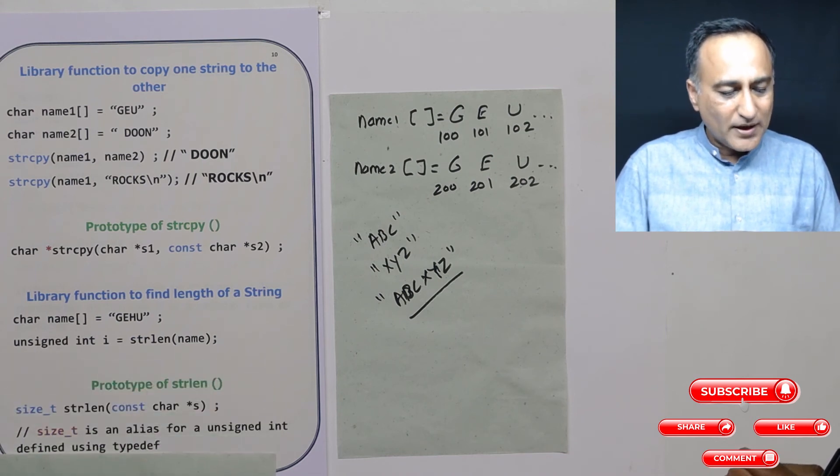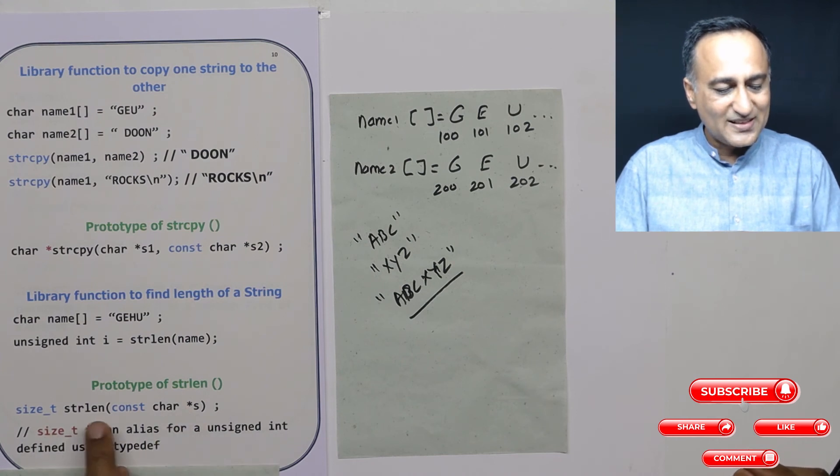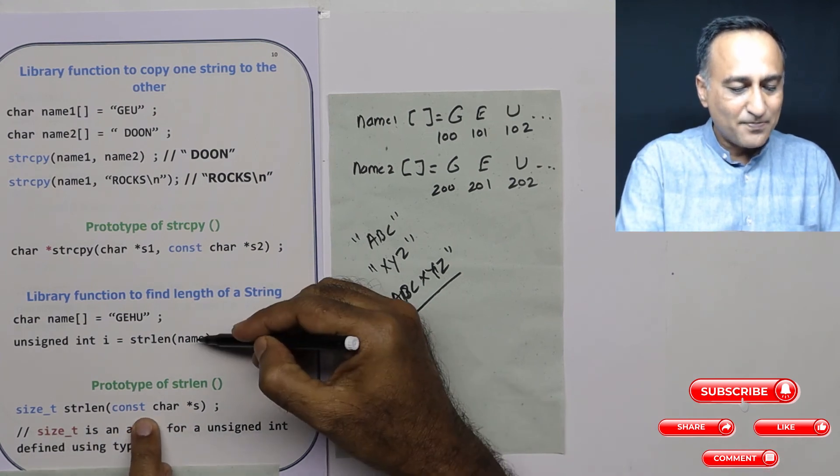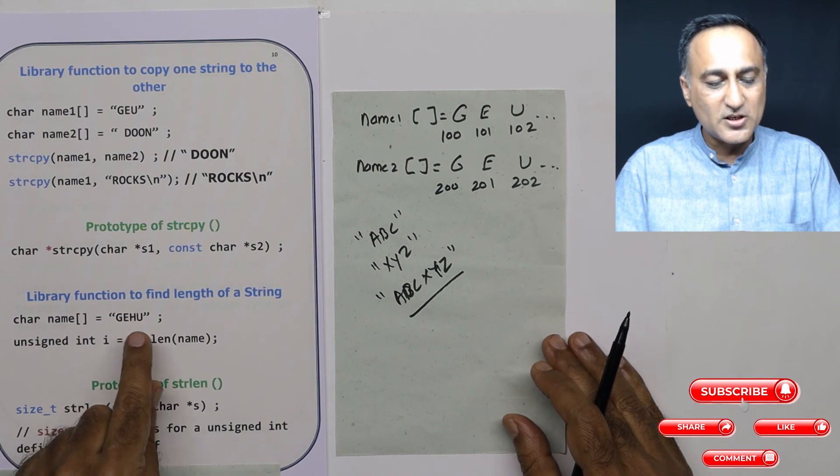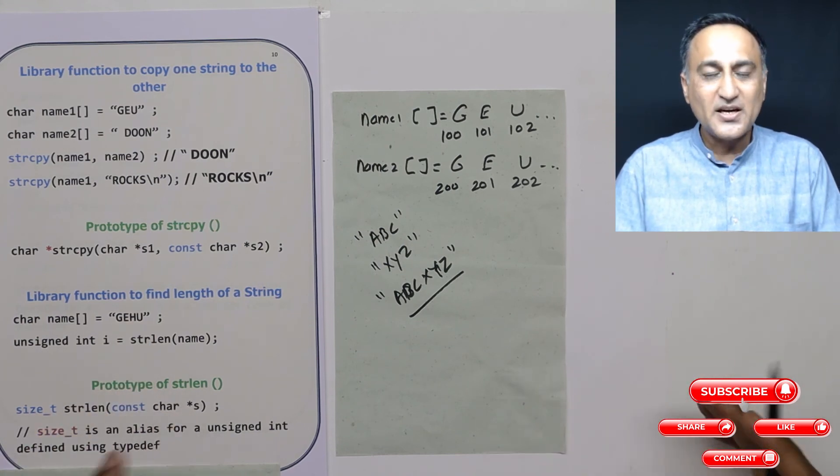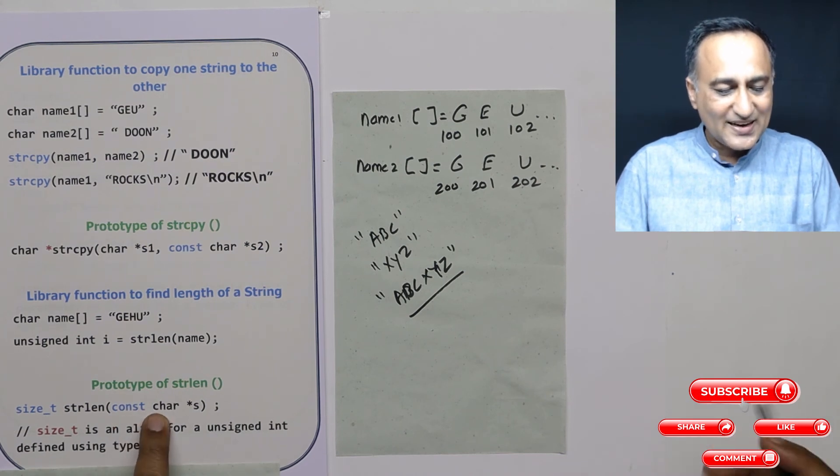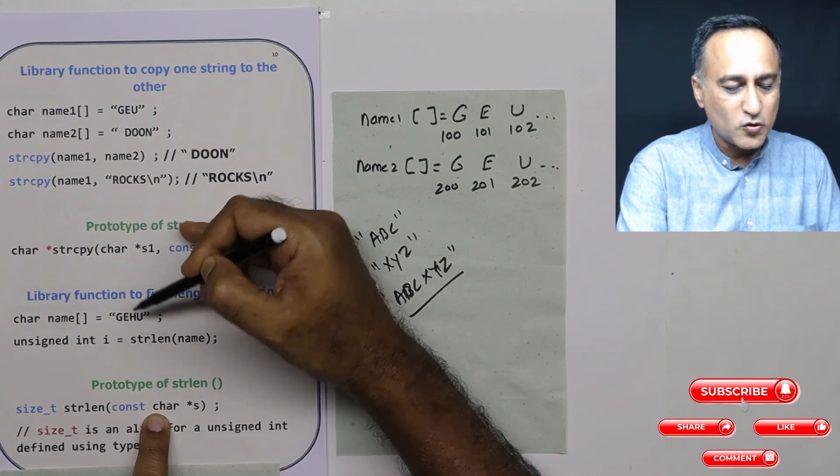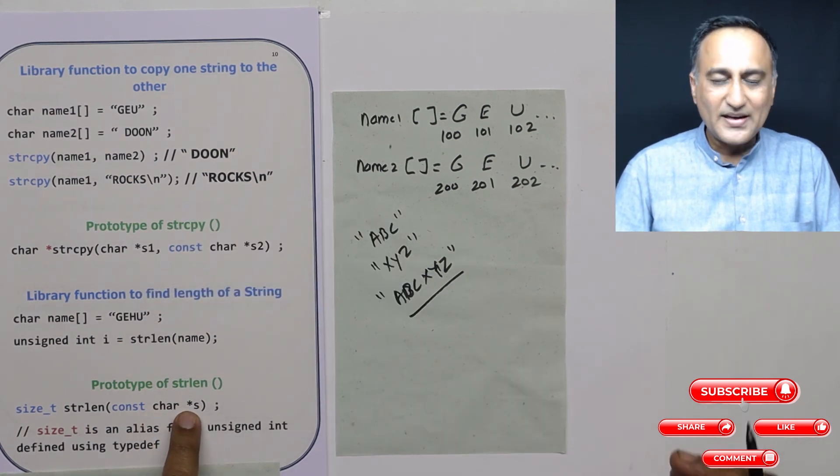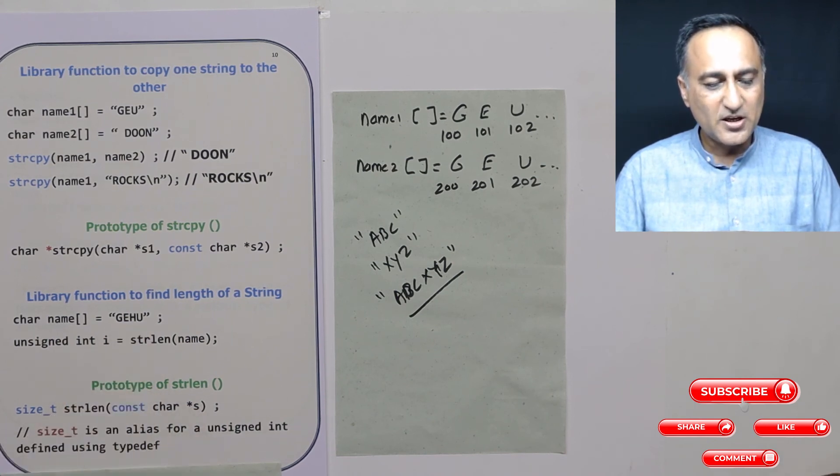Now if you want to look at the prototype of string length, the prototype is going to look something like this. Now this name indicates that it's going to be a constant type of array. That means I cannot change the contents of gehu. Makes sense. Why would string length want to change? It just wants to find out the length. This constant char indicates that I cannot change any of these alphabets gehu.